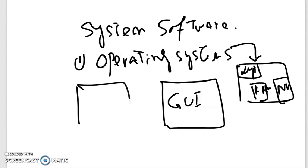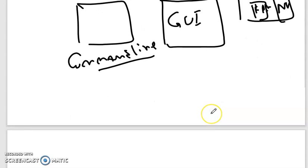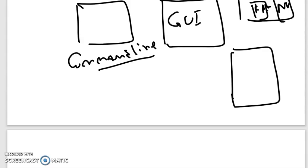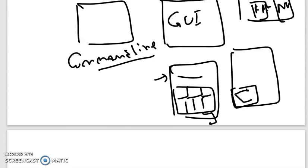In older systems there was an interface called the command line interface, which was difficult for users as they had to remember and write different commands to interact with the computer. An example of a graphical user interface is a smartphone, where there are different icons. For example, to make a call there is an icon with a telephone symbol. We touch the icon, the dialer screen appears, we touch different numbers, and we make a phone call. This user interface is an easy interface.